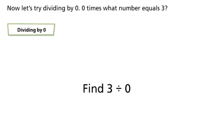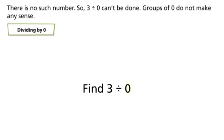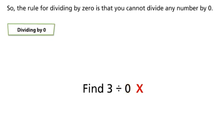Now let's try dividing by zero. Zero times what number equals 3? There is no such number. So 3÷0 can't be done. Groups of zero do not make any sense. So the rule for dividing by zero is that you cannot divide any number by zero.